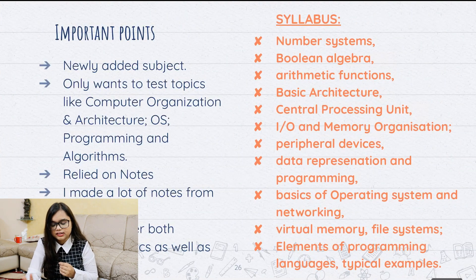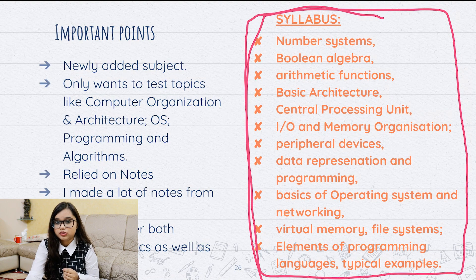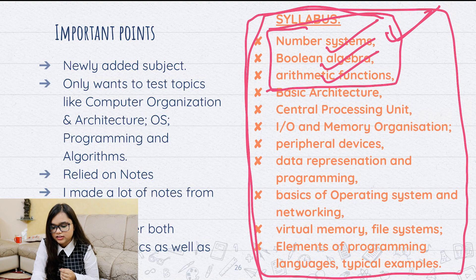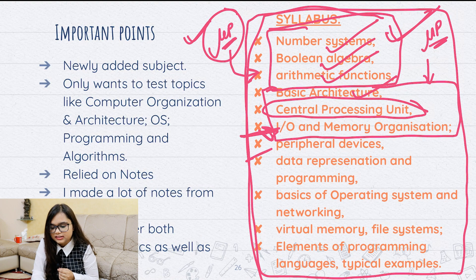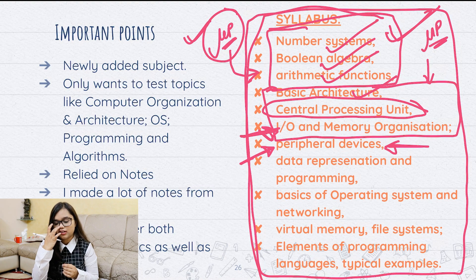Let me walk through the syllabus quickly. Number systems, Boolean algebra, and arithmetic functions — these three are already covered in digital electronics. For basic architecture, CPU, and memory organization, we have some idea from the subject of Microprocessors, which is why interlinking of subjects is very important. Regarding peripheral devices — I agree it's a bit tough. I covered the peripheral devices in Microprocessors but wasn't sure exactly what to cover here, so I kind of skipped this topic.